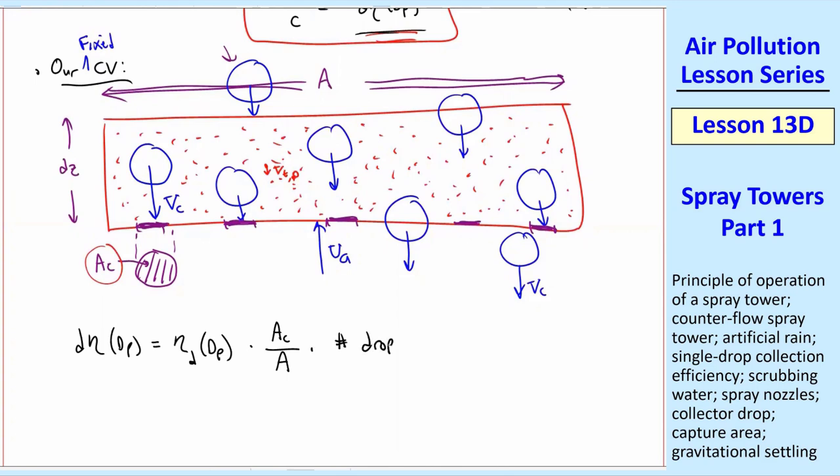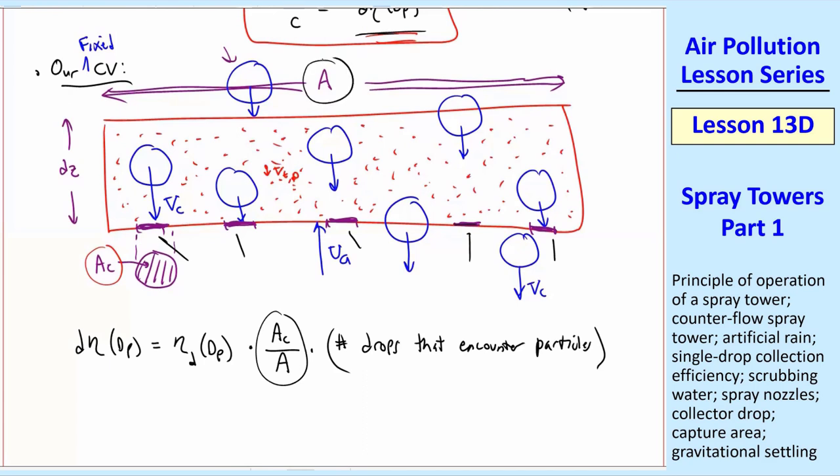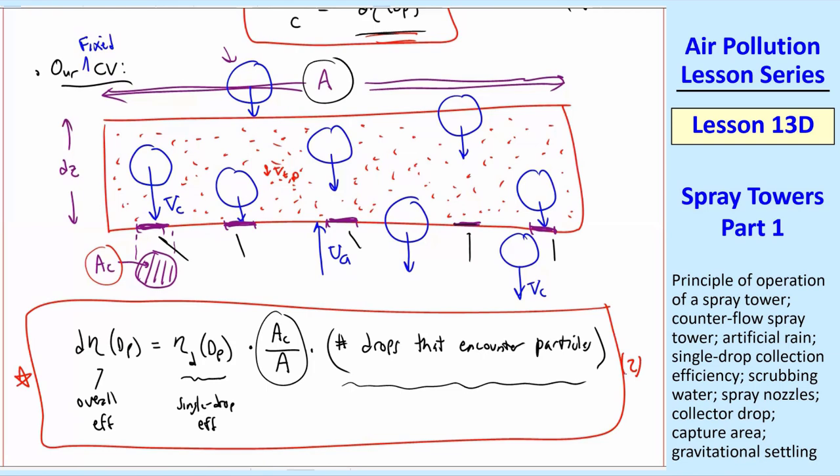Times, here's where it gets a little bit tricky. I'll call this the number of drops that encounter particles. Only this portion of the area actually collects particles. This area ratio represents the fraction of the total cross-sectional area A where drops are actually able to encounter particles because they're inside this control volume with particles underneath them. So that's the area ratio that we use. Since this is an efficiency for one drop, we have to multiply it by the number of drops to get the overall. So the left is the overall efficiency. The eta d is the single drop collection efficiency. I'm going to call this equation 2.